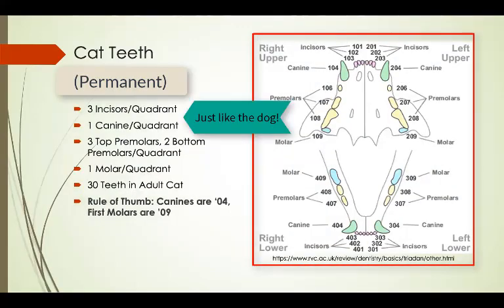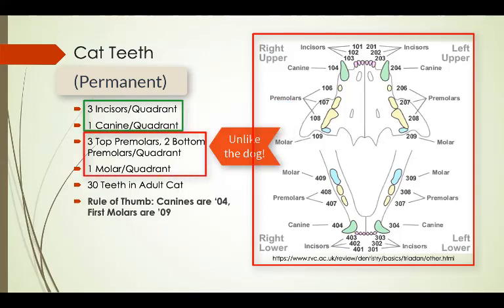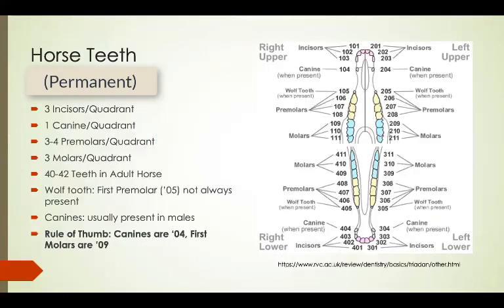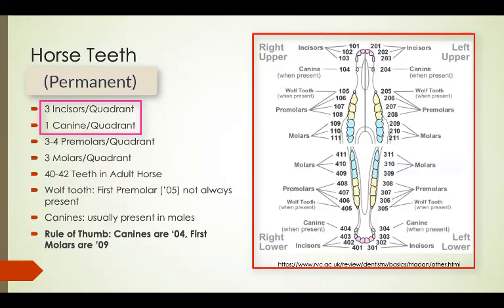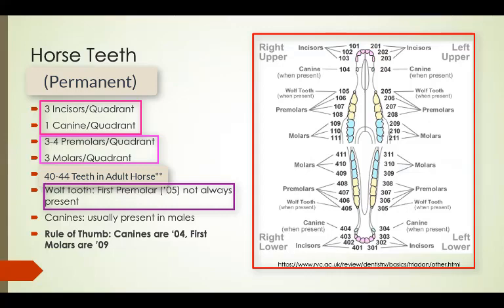Cats, like dogs, have three incisors and one canine per quadrant. However, they only have three top premolars and two bottom premolars. They also only have one molar per quadrant. This means an adult cat should have 30 teeth total. Horses also have three incisors and one canine per quadrant. They have three to four premolars and three molars per quadrant, meaning a horse can have 40 to 42 teeth. Horses sometimes may have a first premolar, or what we know as a wolf tooth, which is usually removed because of concerns with how it will affect a horse's behavior, especially if it contacts the bit of a bridle when the horse is ridden. Canine teeth are usually present in males more so than females.